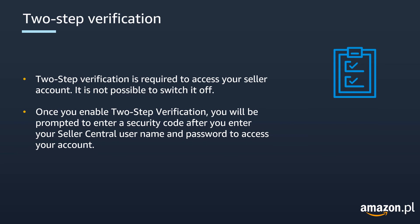Once you enable two-step verification, you will be prompted to enter a security code. After you enter the security code, you will be able to access Seller Central using a combination of username, password, and security code. The code will be sent via text message to your phone number. It can also be received through a voice call, or you can download an authenticator app and obtain it from there.